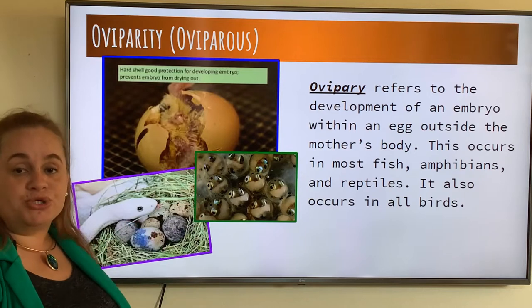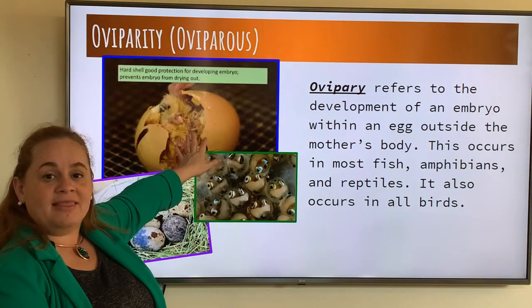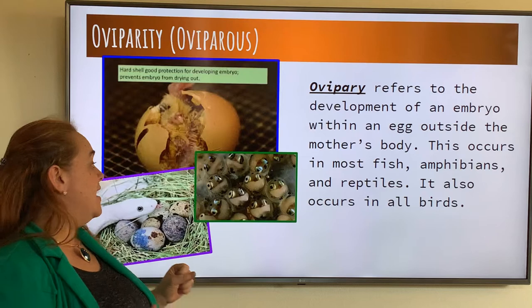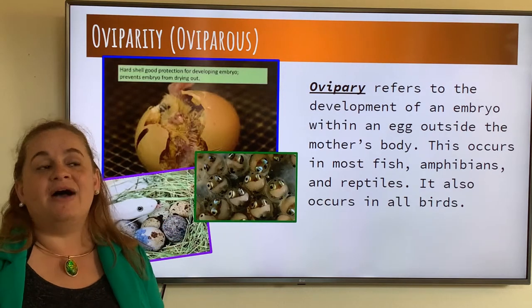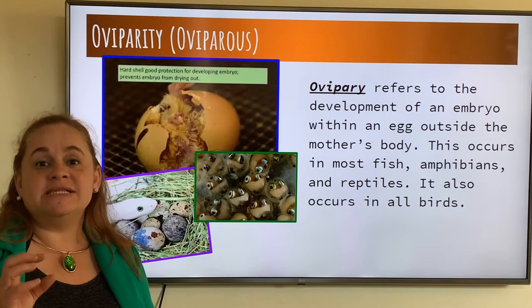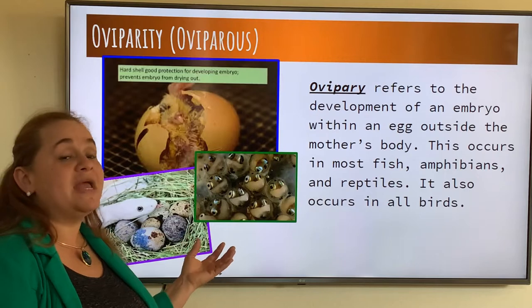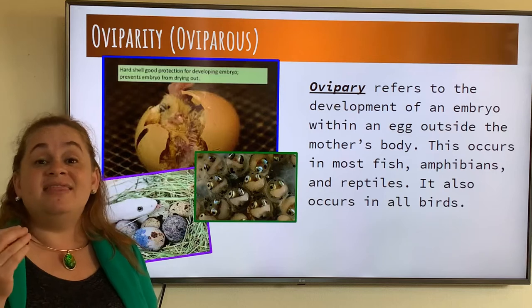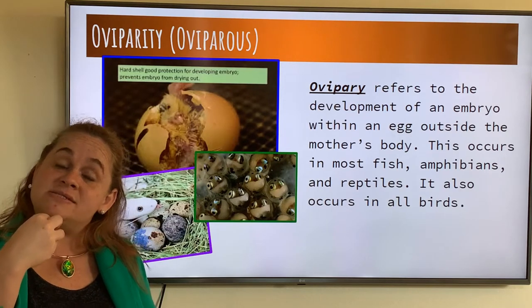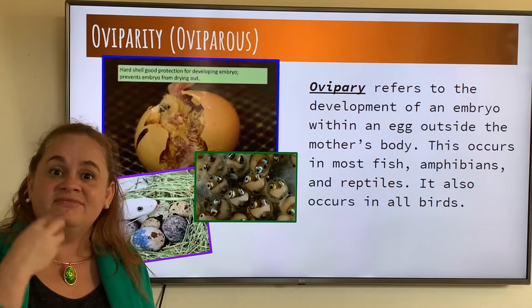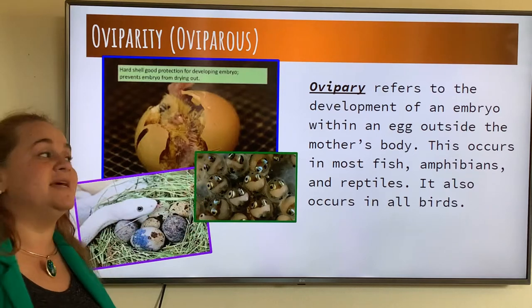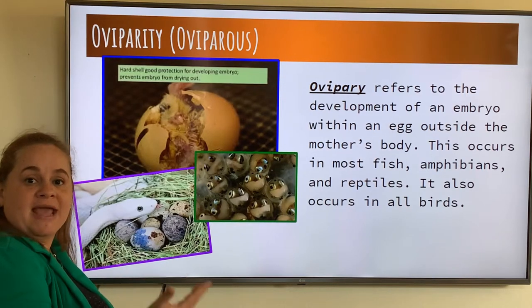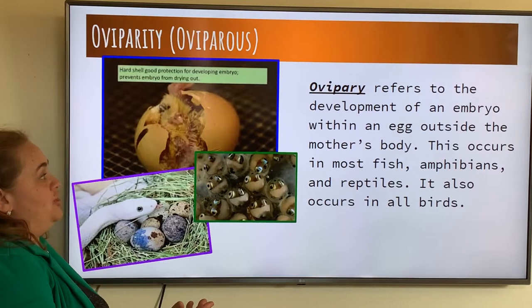Depending on what species we're talking about: birds have the hard egg — that hard surface that we all know and have touched. In amphibians and reptiles, usually we have a leathery egg, softer to the touch. In fish, we have soft eggs that are usually placed outside of the mom. In some cases, they keep the eggs inside their mouth, and that parent is starving themselves until the little species hatch. That is oviparous — animals that lay eggs as a strategy to reproduce or to protect their young.